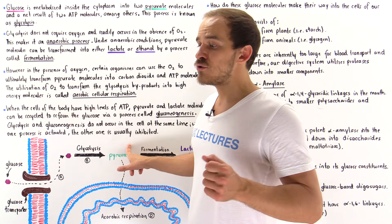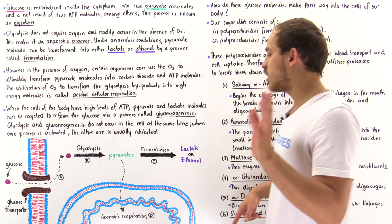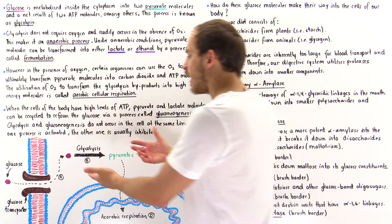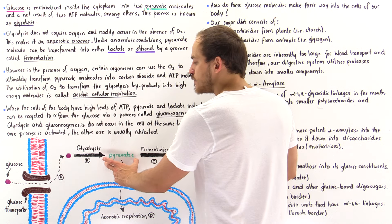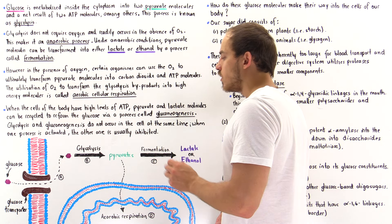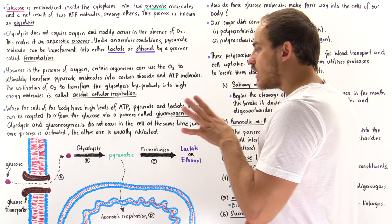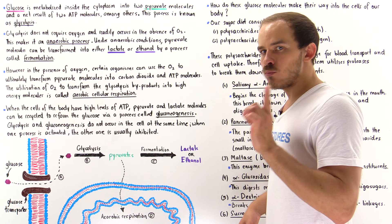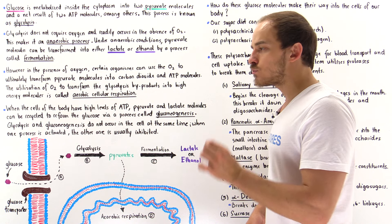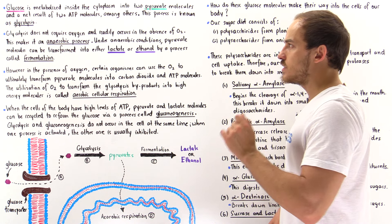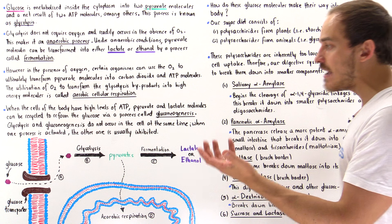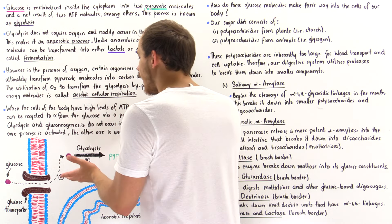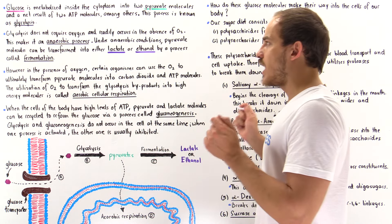Glycolysis also produces NADH molecules, which we'll discuss in a future lecture. Ultimately, glycolysis produces these byproduct molecules we call pyruvates. Importantly, glycolysis is an anaerobic process, meaning it does not require oxygen to take place. Whether or not we have oxygen doesn't actually matter because glycolysis doesn't use oxygen.